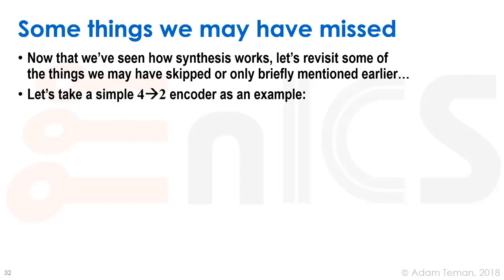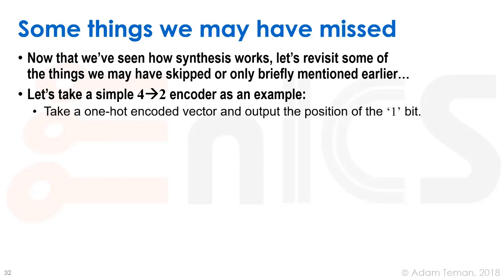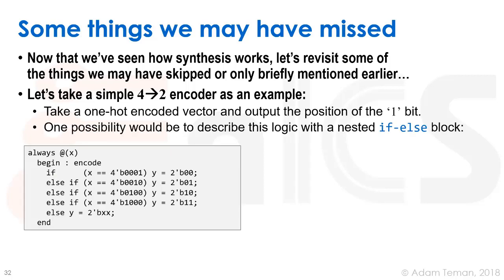For example, let's take a 4-to-2 encoder. Remember that what an encoder does: it takes a one-hot encoded vector and outputs the position of the one bit in binary encoding. One way we could possibly write this — I'm going to show you how different ways of writing our Verilog could affect things.